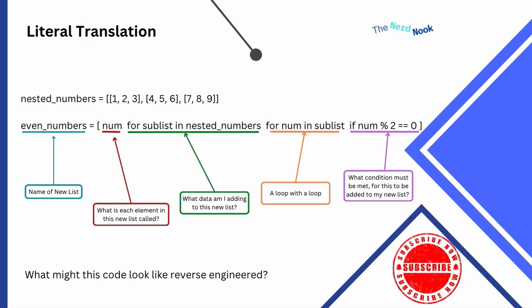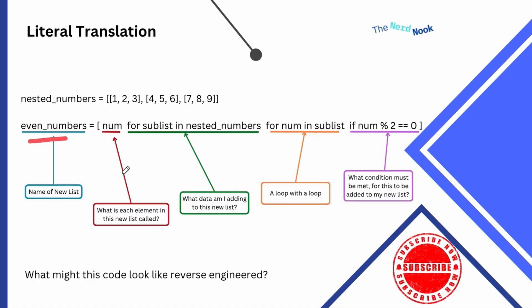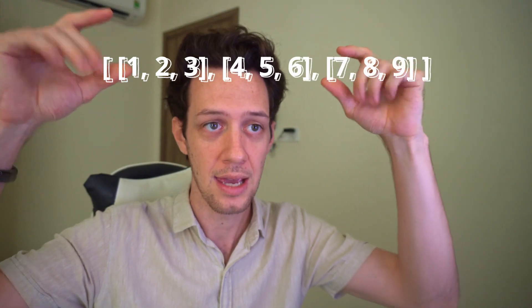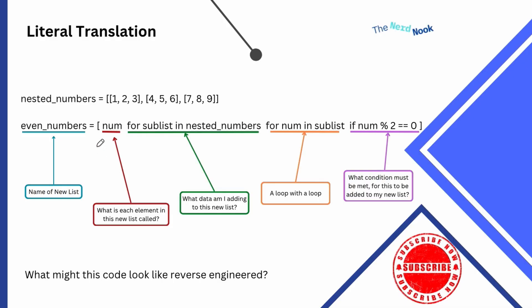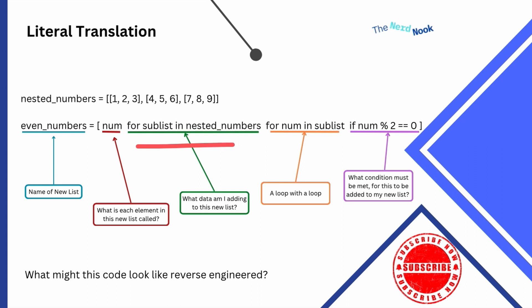Let's take a look at one more advanced example and add an additional step to our comprehensions. Imagine we have a nested list — a master list with one, two, three child lists inside. I want to create a new list of only even numbers, going through my nested lists and pulling all the even numbers into this new list. Here's my comprehension: it's a new list. The first part is what each element in this new list is called — just a nickname, a variable. It's going to represent every element. Then it's a loop in a loop: I go through my initial list and then through the child lists.